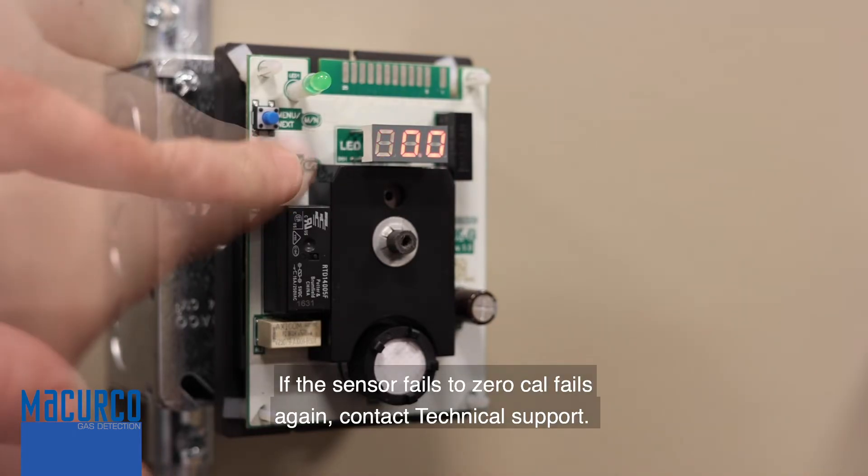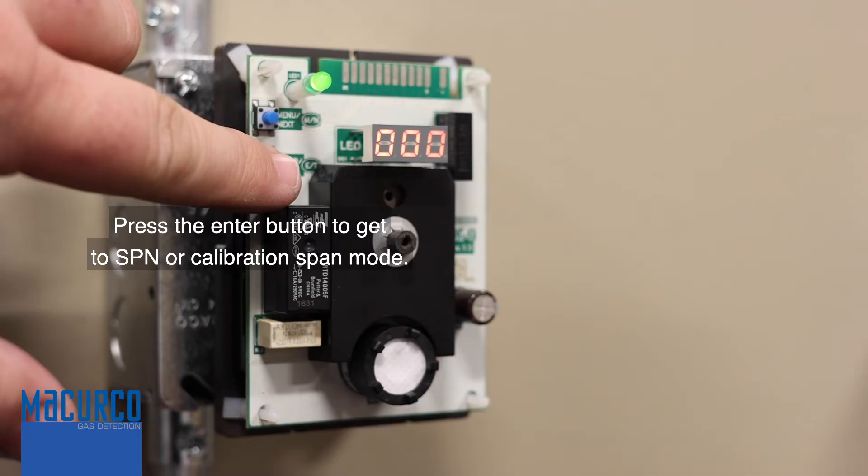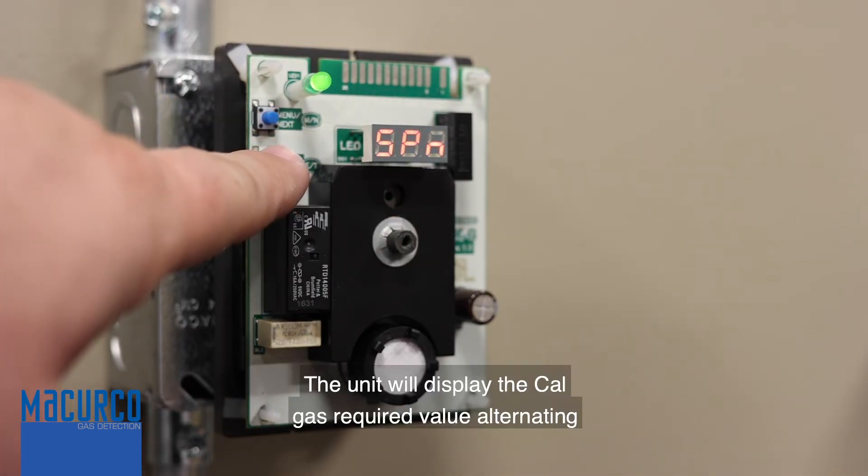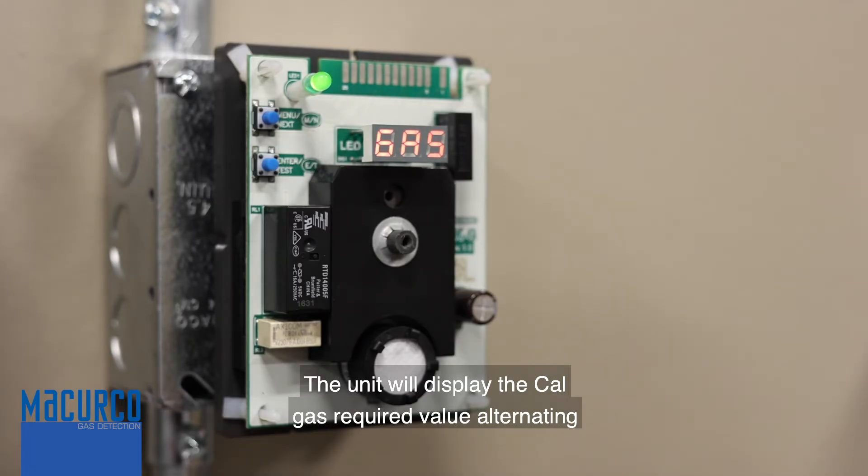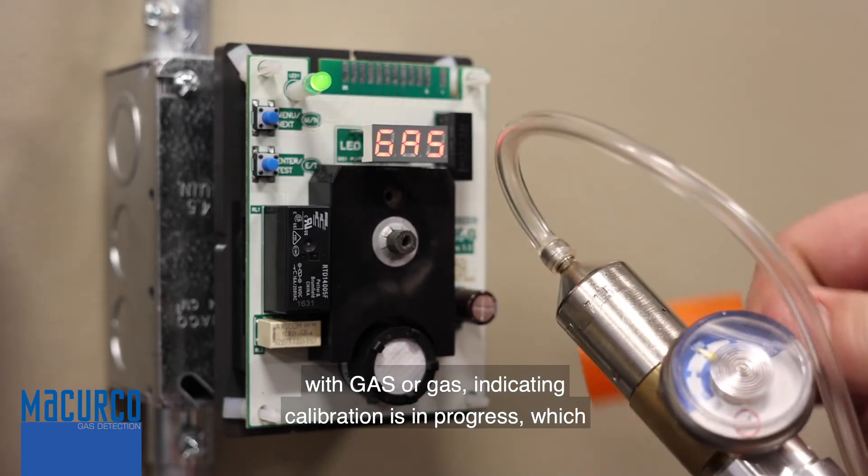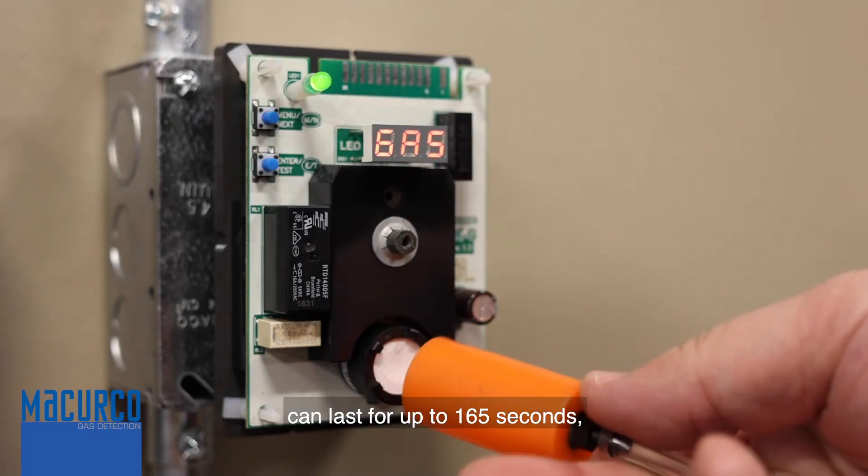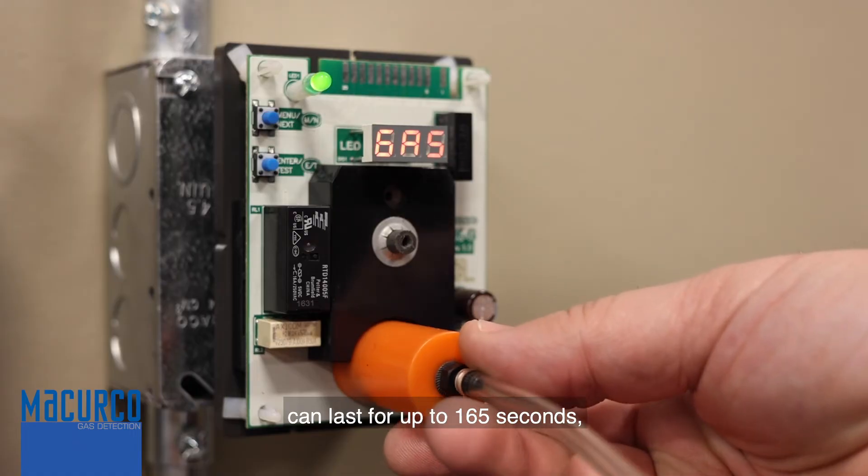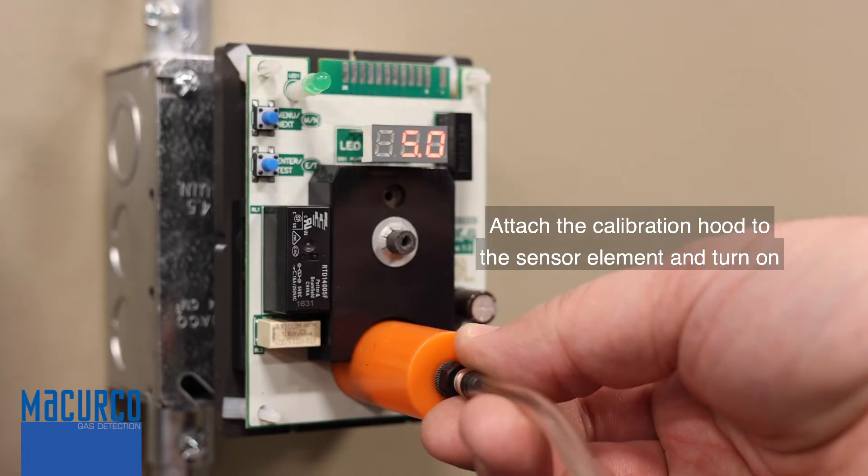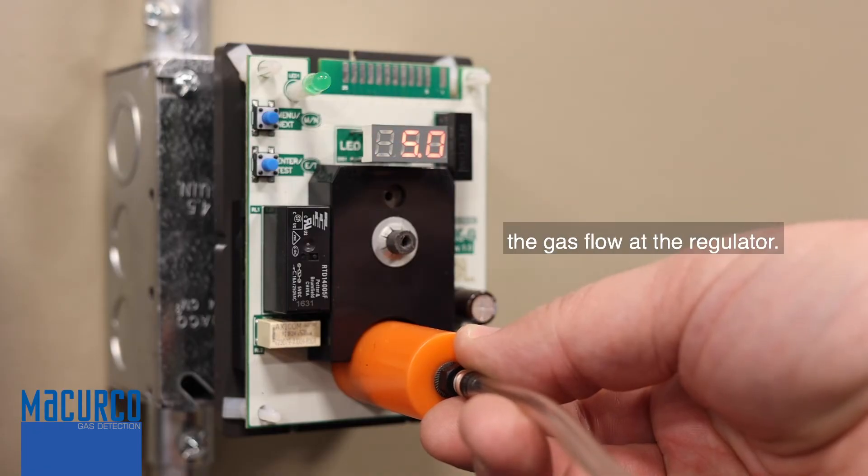Press the enter button to get to spn or calibration span mode. The unit will display the cal gas required value alternating with gas, indicating calibration is in progress, which can last for up to 165 seconds. Attach the calibration hood to the sensor element and turn on the gas flow at the regulator.